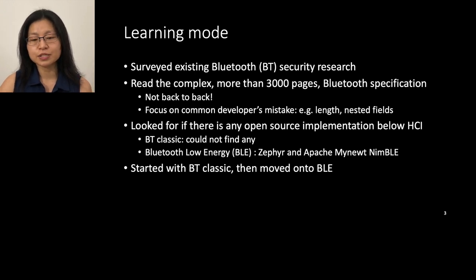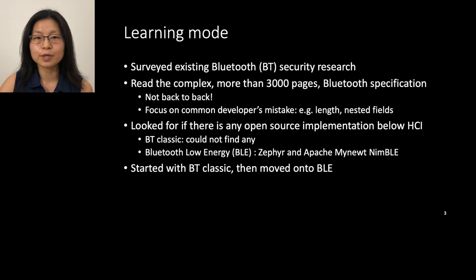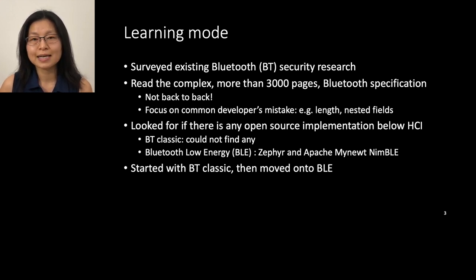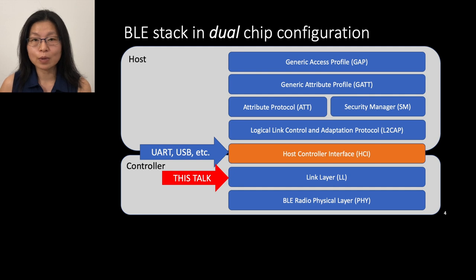I started Bluetooth security by surveying existing Bluetooth security research. Then I read the Bluetooth specification, which is actually pretty large, but I didn't read all of it. I generally focused on length fields and embedded headers where programmers are likely to make mistakes. Then I looked for open source implementations because sometimes the documentation was vague. For Bluetooth Classic I couldn't find any open source implementation, but I found Zephyr and Apache MyNewt Nimble as Bluetooth low-energy open source implementations. Today I'm going to focus mainly on BLE, since that's what I've been working on recently.